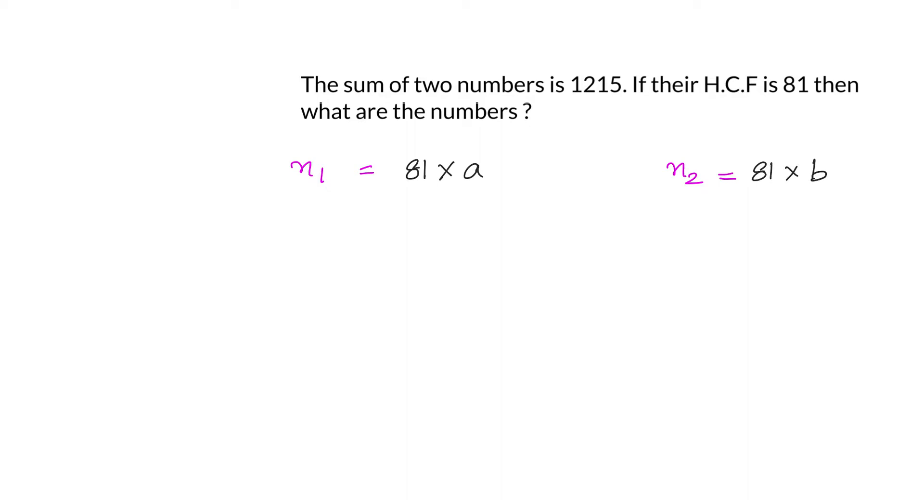Now we have been told that n1 plus n2 is 1215. So I will write down n1 plus n2 equals to 1215. That means 81a plus 81b equals to 1215. We divide by 81 what we are getting is a plus b equals to 15.